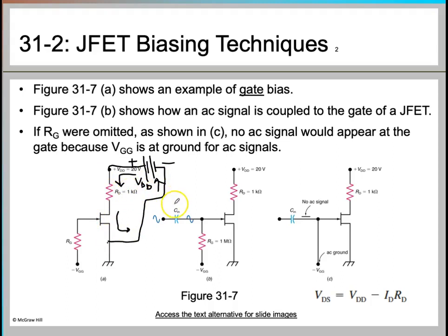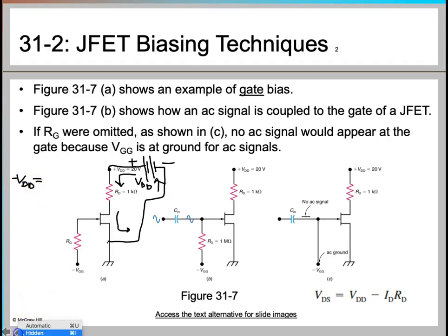Assuming a current direction and starting from the negative terminal, the KVL equation becomes: negative VDD, then the sign across RD is positive, so we write positive ID·RD, and then plus VDS. This whole expression equals zero.